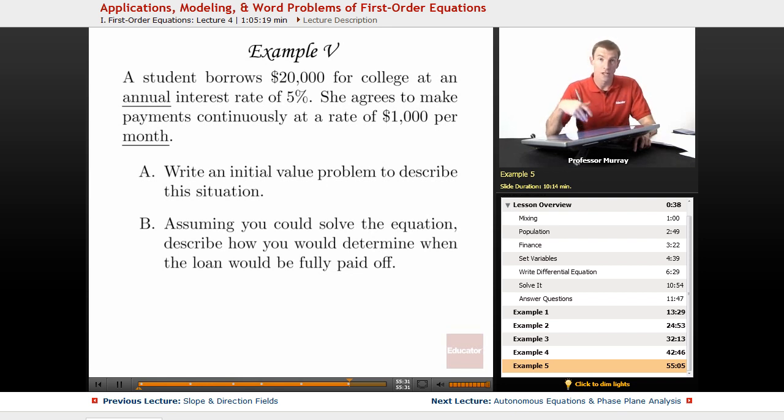So the idea here is that every month she's going to pay $1,000, that's a constant, but at the same time, she's got this large balance which is building up interest. So we have to write an initial value problem to describe this situation, and then we don't actually have to solve it in this example, but we should determine how we could figure out when the loan would be fully paid off. So let's go ahead and set this up.